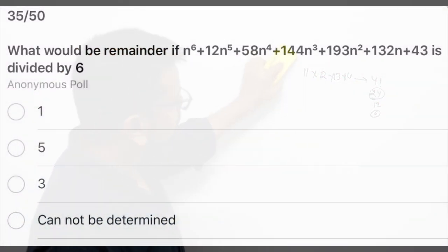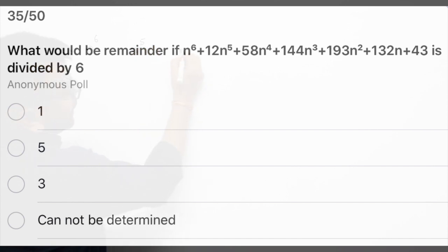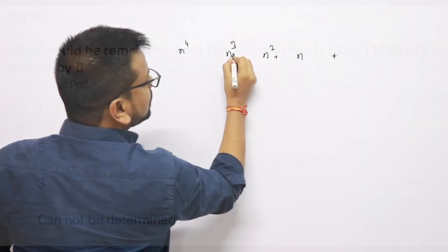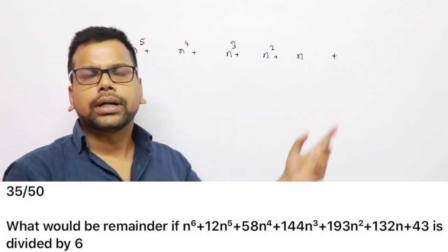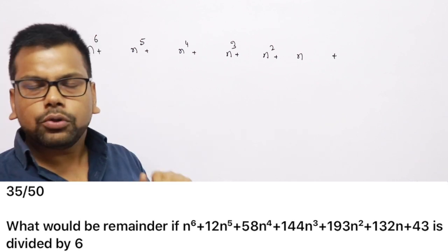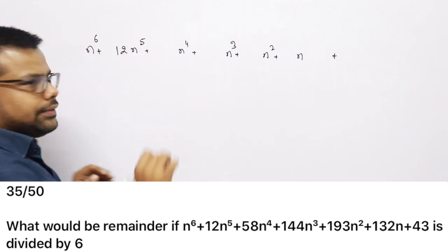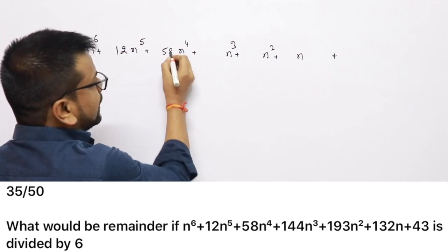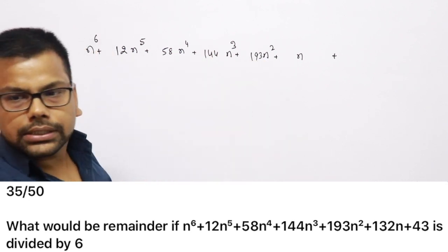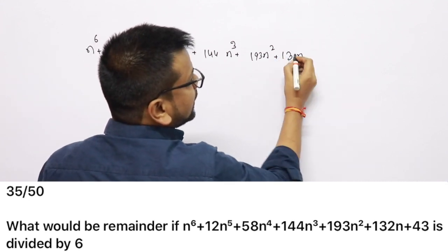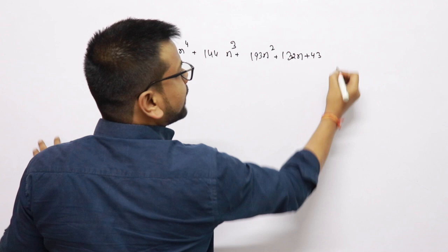In front of you is the product of a few consecutive numbers. When you look at the polynomial, which is in terms of n raised to the power 6, and there are coefficients attached — 12 and 5, then 58, then 144, then 193, then 132, and finally 43 — you need to find the remainder when this expression is divided by 6.